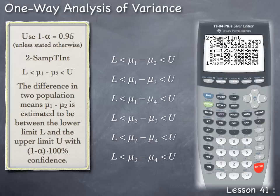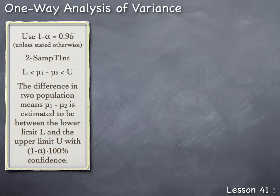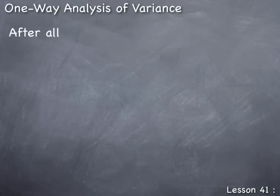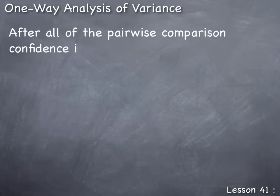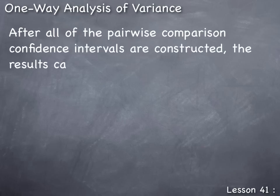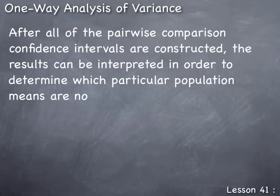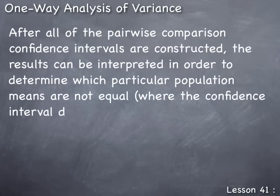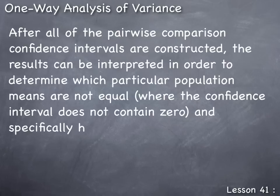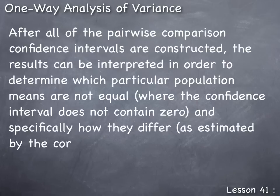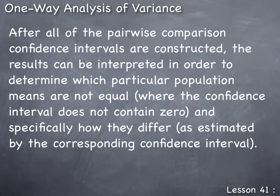Now that we have all six pairwise comparison confidence intervals, we can interpret the results. After all the pairwise comparison confidence intervals are constructed, the results can be interpreted to determine which particular population means are not equal — that is, where the confidence interval does not contain zero — and specifically how they differ, as estimated by the corresponding confidence interval.